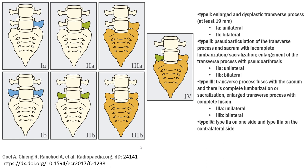And the last one is Type 4. It is Type 2a on one side and Type 3a on the contralateral side. So Type 4 is the combination of Type 2a and Type 3a. Thank you.